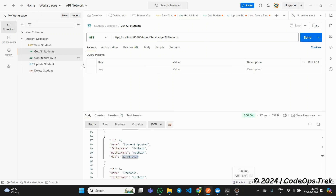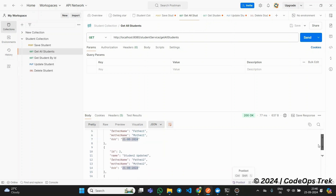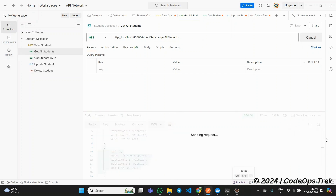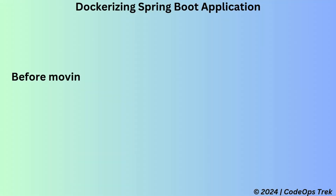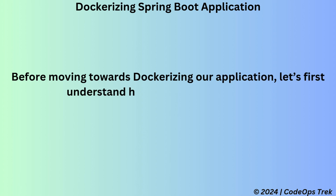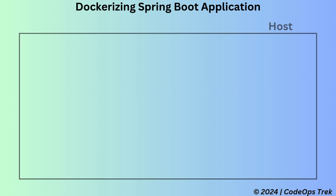Let's delete the second student and validate the change by calling the GetAllStudents API again. As you can see, the second student is no longer in the list. Before moving towards dockerizing our application, let's first understand how it runs without Docker. Right now, we have our PC, which we call the host system.